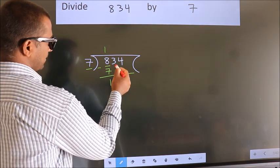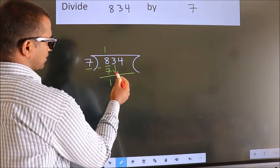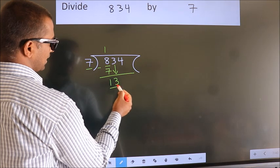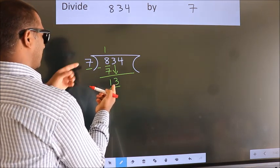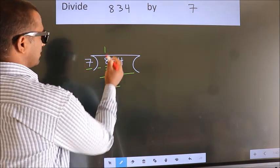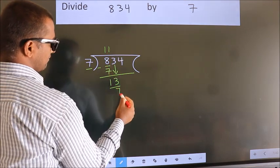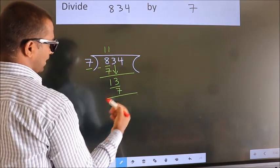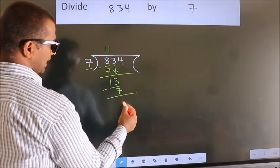After this, bring down the beside number. So 3 down. So 13. A number close to 13 in the 7 table is 1 times 7 is 7. Now we subtract. We get 6.